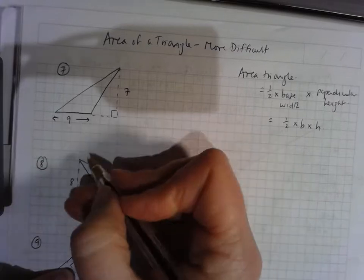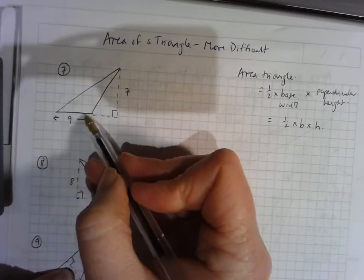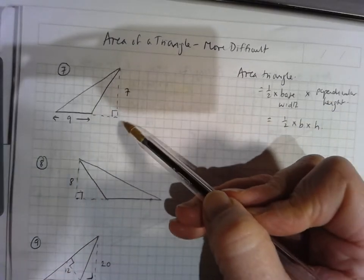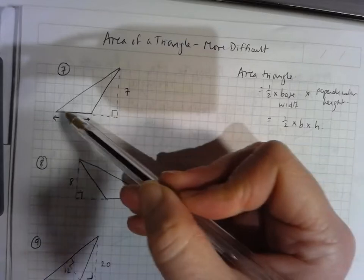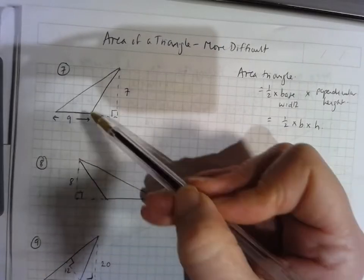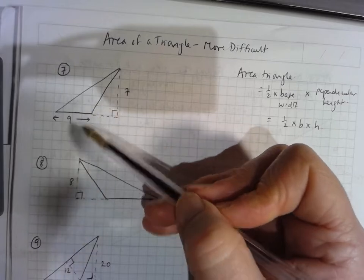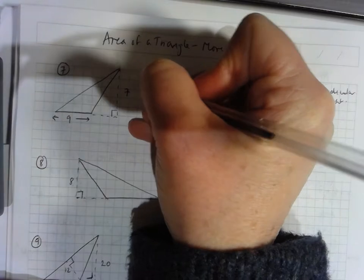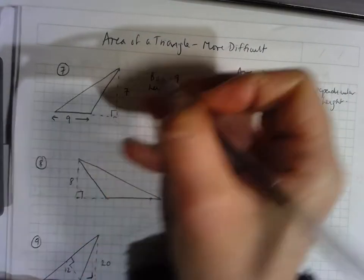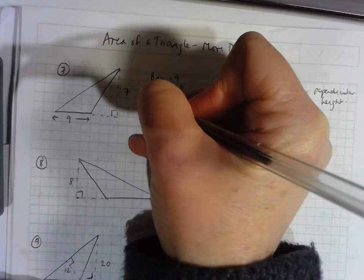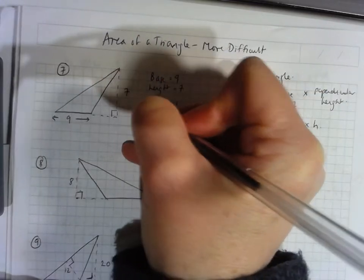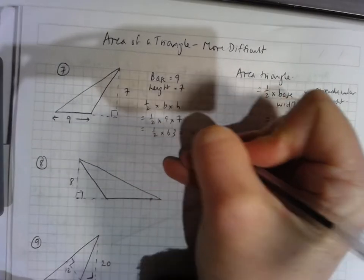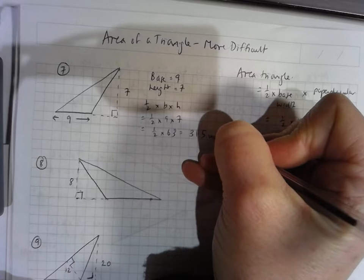So here's a triangle. 9 is this side. We don't know either of the other sides, but what they have told us is the height is 7. Now this is weird because the height of this triangle is outside of the triangle. They couldn't actually find a place to draw the perpendicular height of this triangle because this angle is bigger than 90 degrees. So the base width is 9 and the height is at right angles to the base and it's 7. So the area of that triangle is a half by base by height, so a half by 9 by 7, which is a half of 63, which is 31.5 units squared.